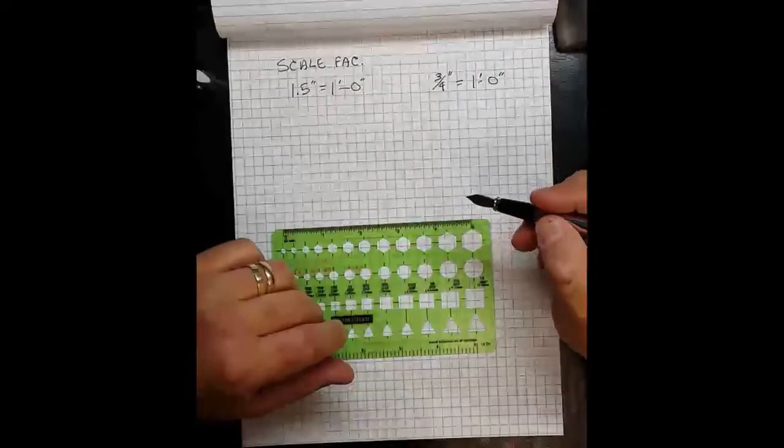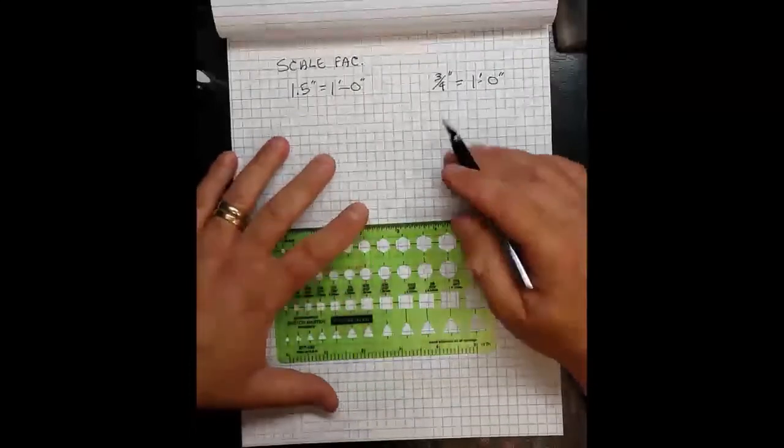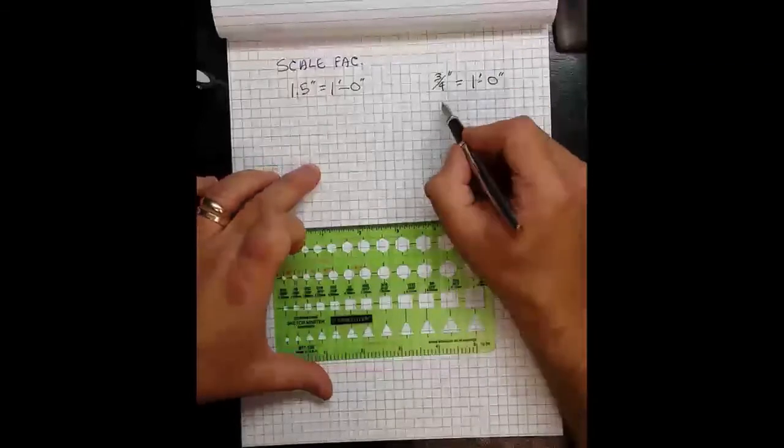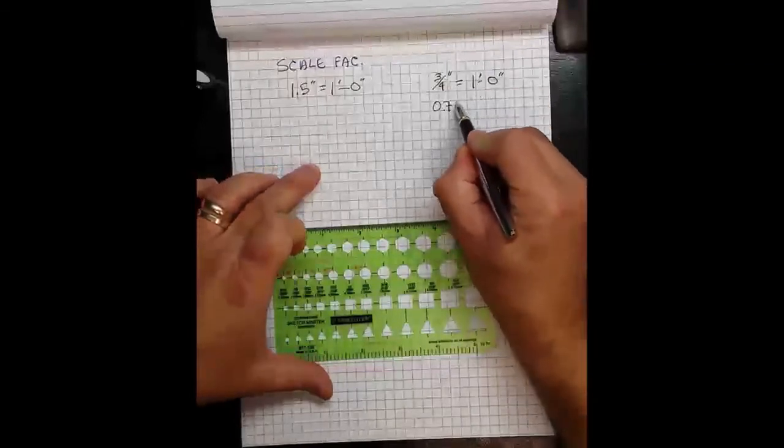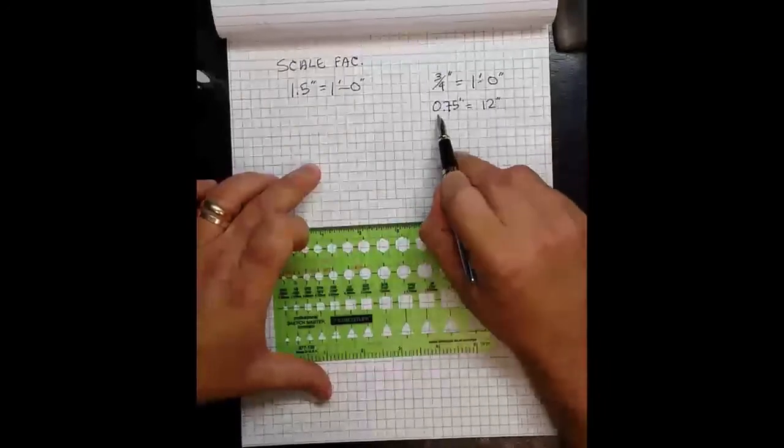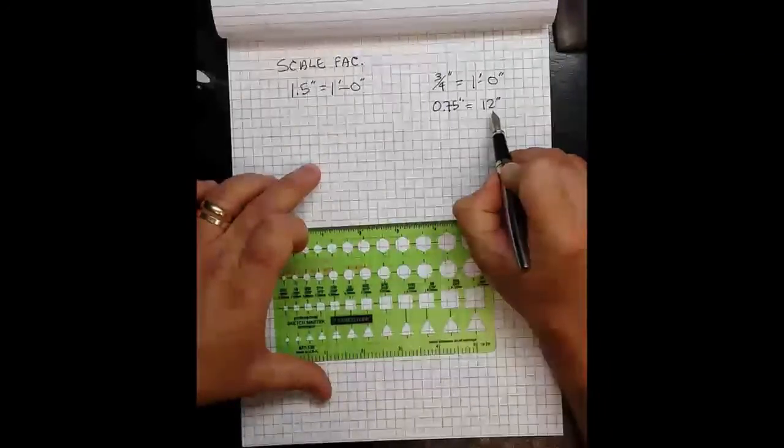What I'm going to point out is it's important to know the scale factors. So I'm going to just translate this really quick. This is three-quarters of an inch equals 12 inches. And this is showing the drawn scale to the actual physical real-world scale.